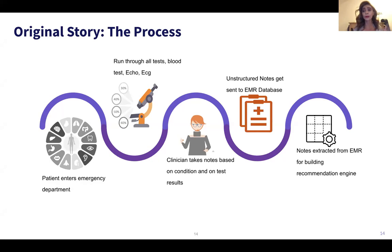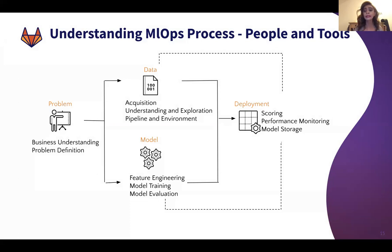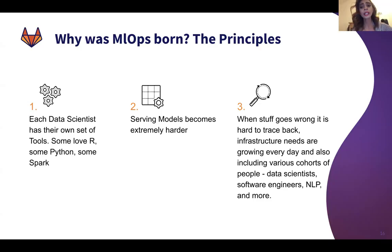This is the process all the way from the business — or the patient entering a building — to the building of an AI model. When we look at understanding the machine learning operations process, we have: the problem definition (for this case, predictive classification for ACS), understanding the data and its availability (here using the electronic medical record systems), the models and algorithms to use, the features to build, and the deployment — which goes into scoring, performance monitoring, and model storage.